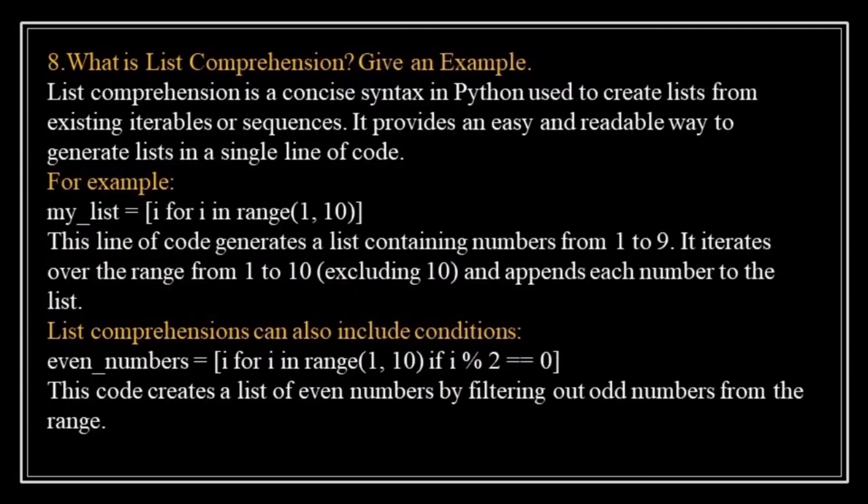What is list comprehension? Give an example. List comprehension is a concise syntax in Python used to create lists from existing iterables or sequences. It provides an easy and readable way to generate lists in a single line of code. For example, mylist = [i for i in range(1, 10)]. This generates a list containing numbers from 1 to 9. It iterates over range(1, 10), excluding 10, and appends each number to the list. List comprehension can also include conditions, like: even_numbers = [i for i in range(1, 10) if i % 2 == 0], which creates a list of even numbers by filtering out odd numbers from the range.